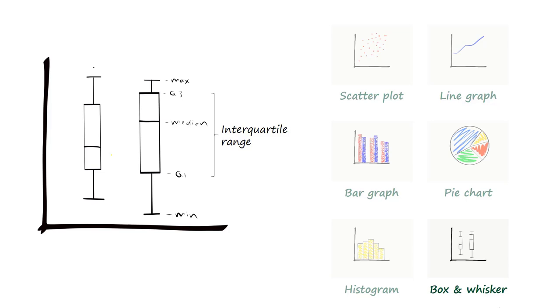Box and whisker plots are ideal for comparing distributions. In this example, we are comparing the distribution of birth weights of male and female babies.